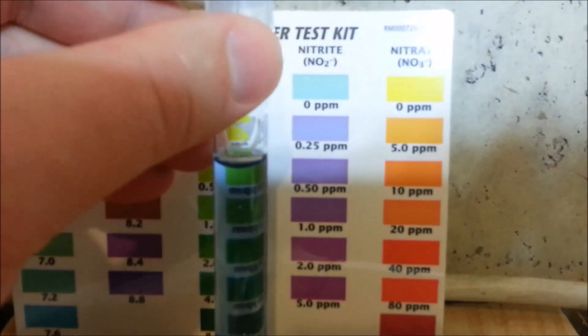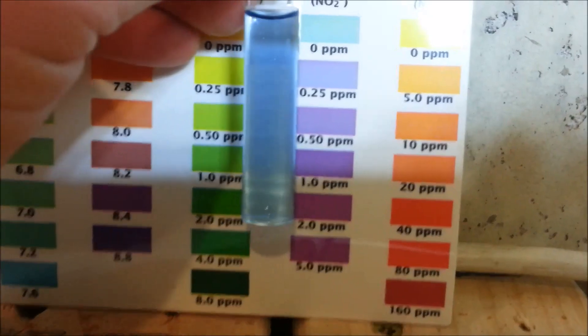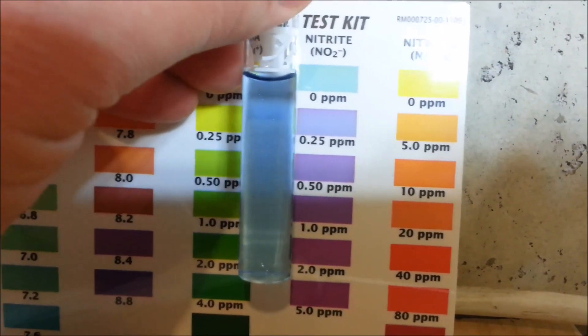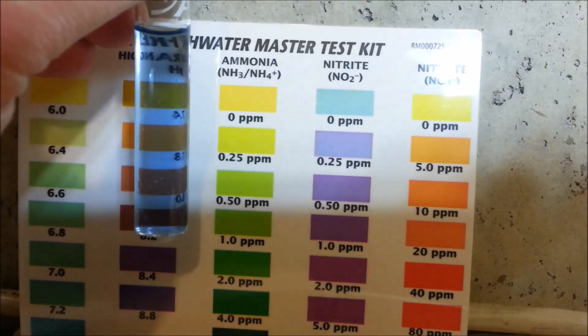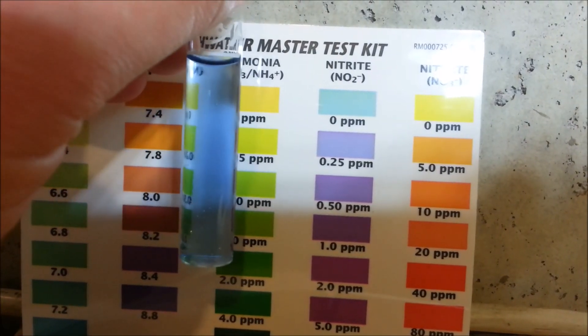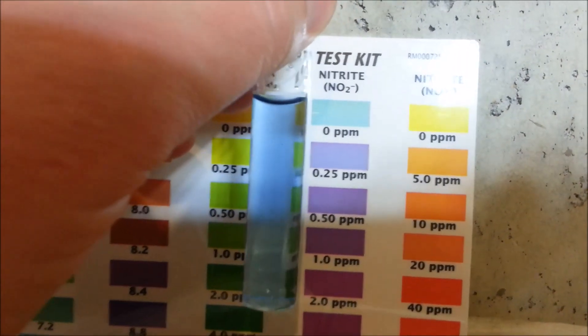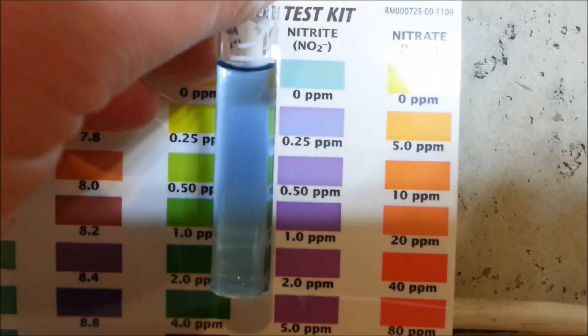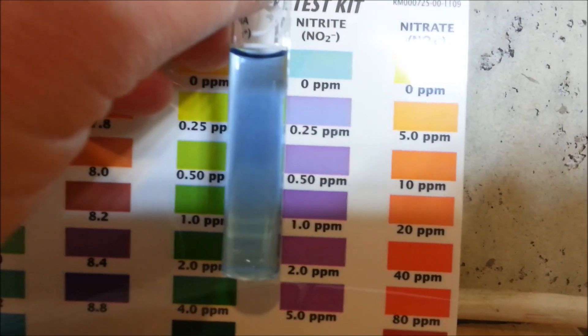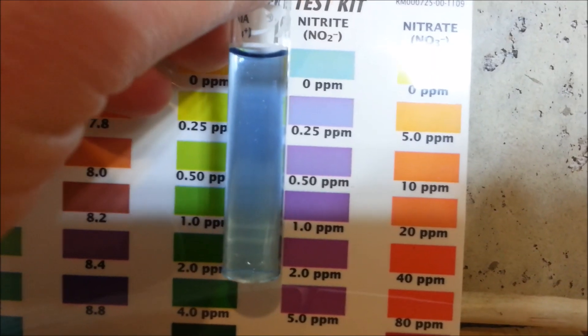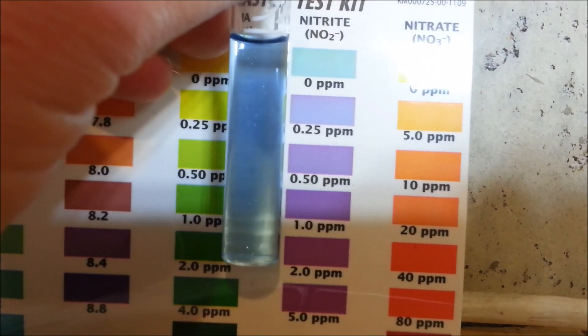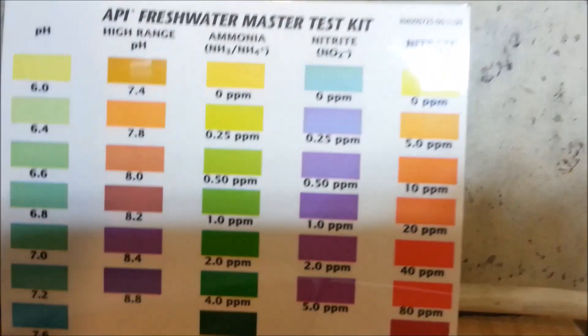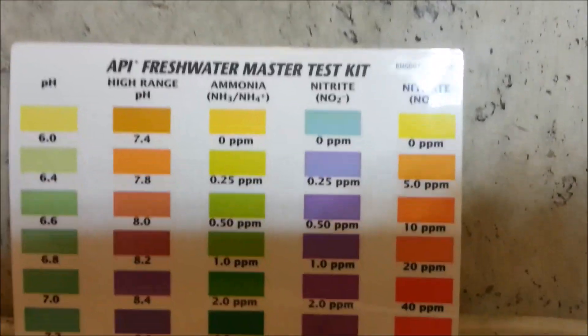The next test is nitrite and this is another one you want to be pretty much at zero. The bacteria are eating up the fish waste and that ammonia, turning that into nitrite right away, and then there's another set of bacteria that should be eating that nitrite up and turning it into nitrate, which is what we want. Again, it looks like pretty close to zero, 0.25 maybe to zero here. That's good. About a week and a half ago I did the same test and it was maxed out at almost five.